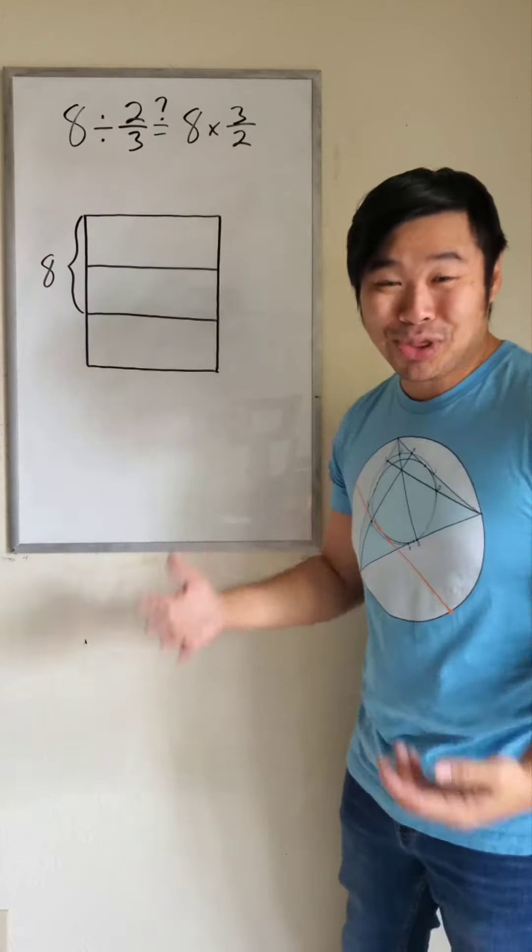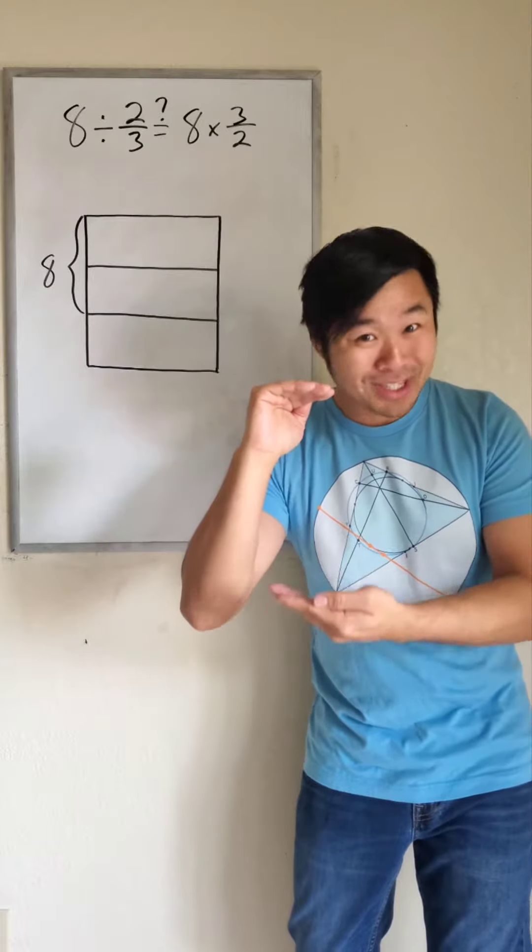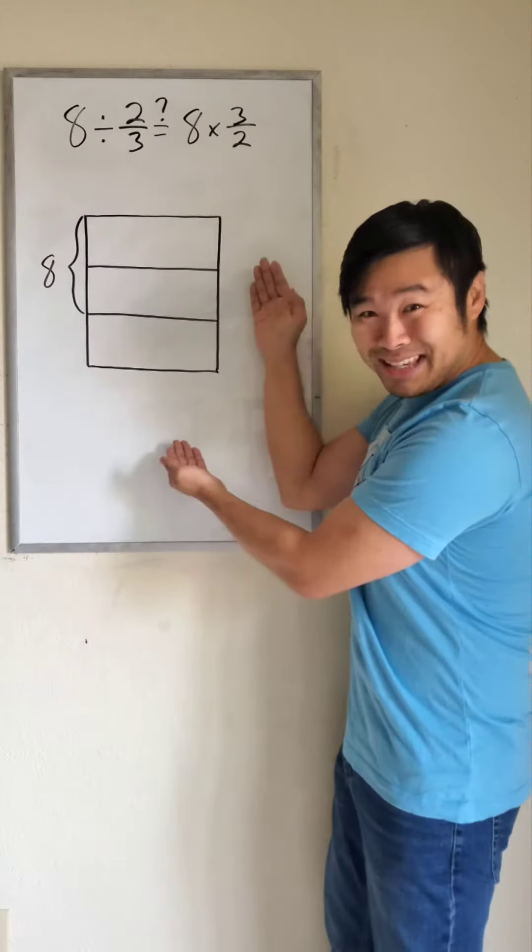So for 8 divided by 2 thirds, if 2 thirds of the whole is worth 8, what's the whole worth? And we can visualize it like this.